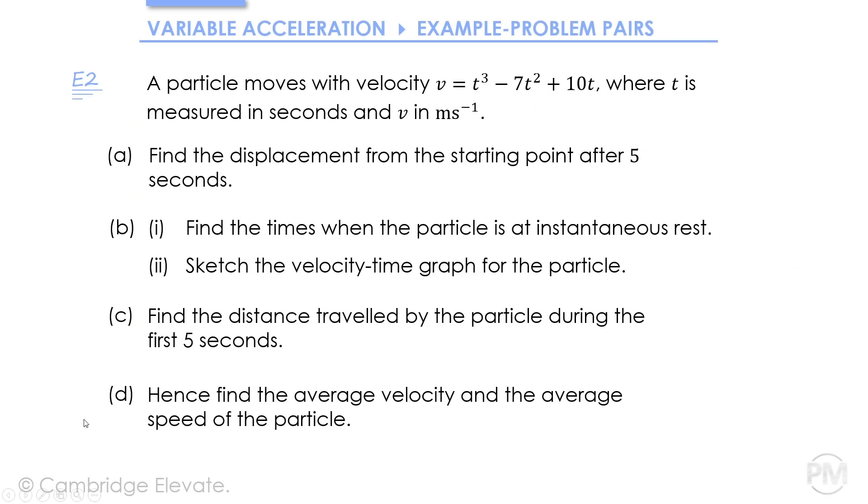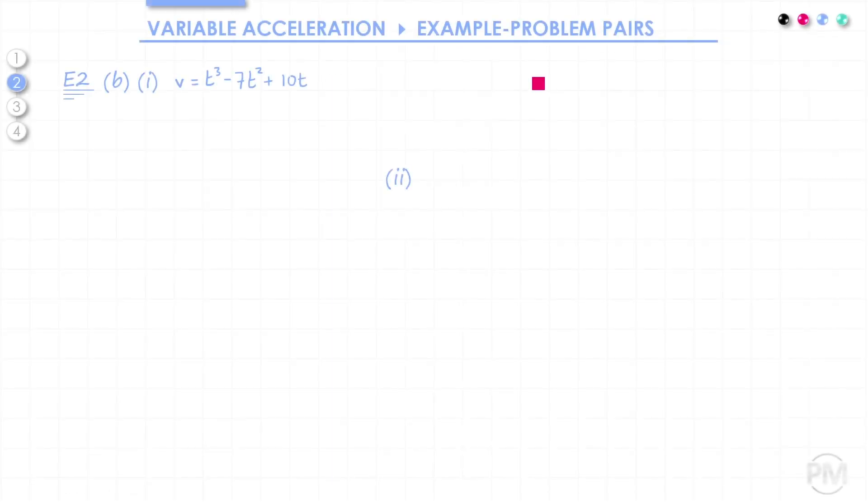In part B, we need to find the times when the particle is at instantaneous rest and also sketch the velocity time graph for the particle. To find the times when the particle is at instantaneous rest, we need to consider when the velocity is 0.